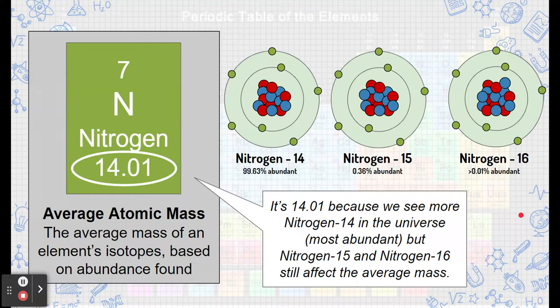That's because we see a lot more nitrogen-14s. Those nitrogen-14s with 99.63% abundance affect our average a lot more than nitrogen-15 and nitrogen-16 do. Those still affect the average, just not so much. That's why the average is around 14, but it's still 14.01.